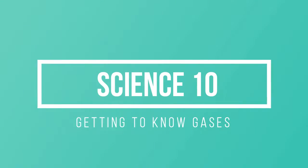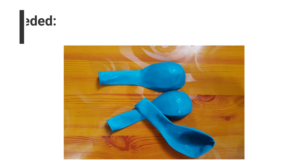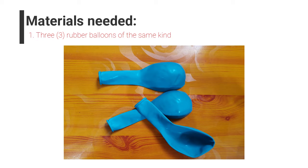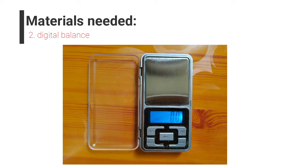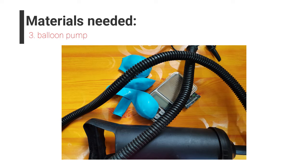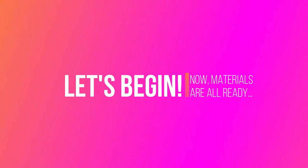Science Grade 10: Getting to Know Gases. Our objective is to prove that gases have mass. Materials needed: three rubber balloons of the same kind, a digital balance, a balloon pump, and your learning activity sheet. Now that the materials are ready, let's begin.